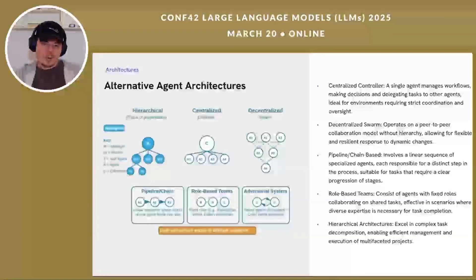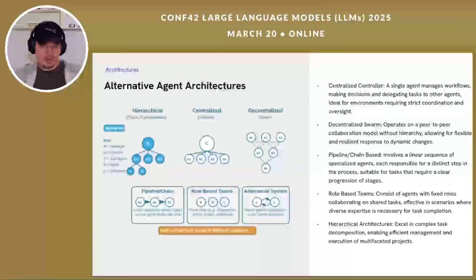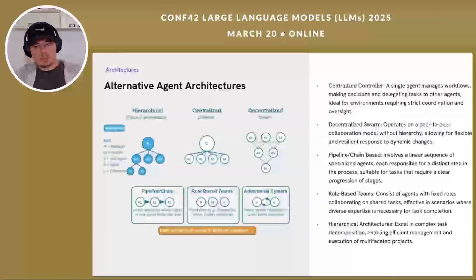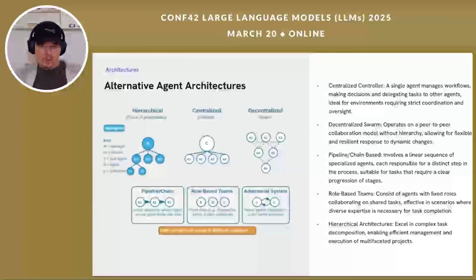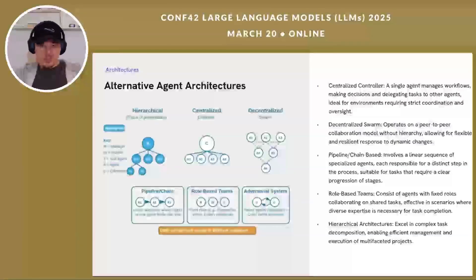While we are focusing on hierarchical architectures today, it's worth acknowledging that several other agent orchestration patterns exist, each with distinct advantages. Centralized controller patterns provide simplicity and clear accountability but can create bottlenecks with a single point of failure. Decentralized swarm approaches offer resilience and emergent behavior but can struggle with coordination and consistent output quality. Pipeline architectures excel in standardized workflows but lack flexibility for complex decomposition. And role-based teams work well for collaborative tasks but with less dynamic specialization. The hierarchical approach combines strengths from several patterns to excel in complex task decomposition requiring both coordination and specialization.